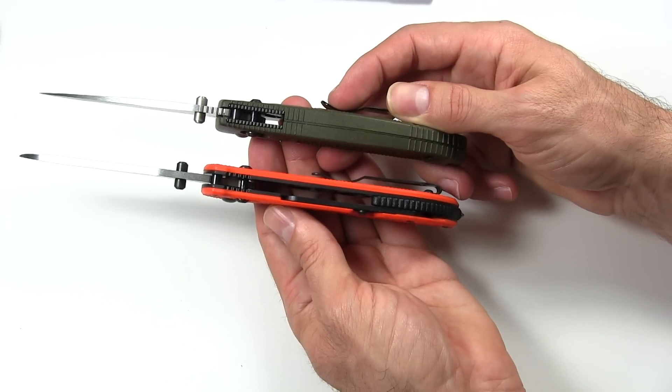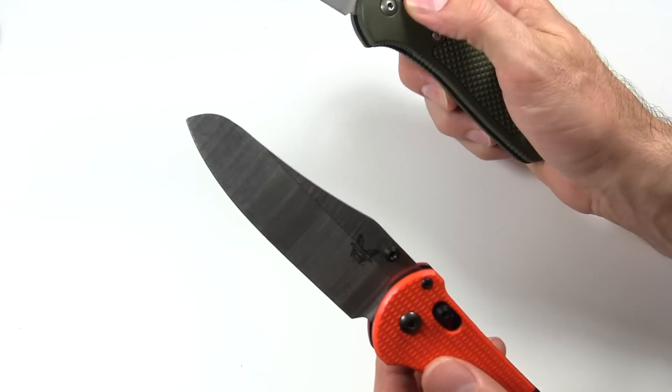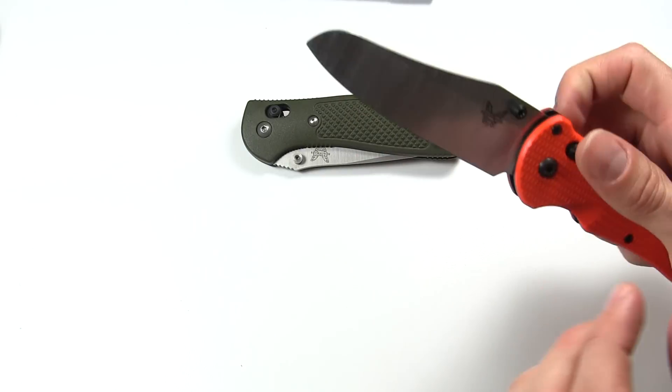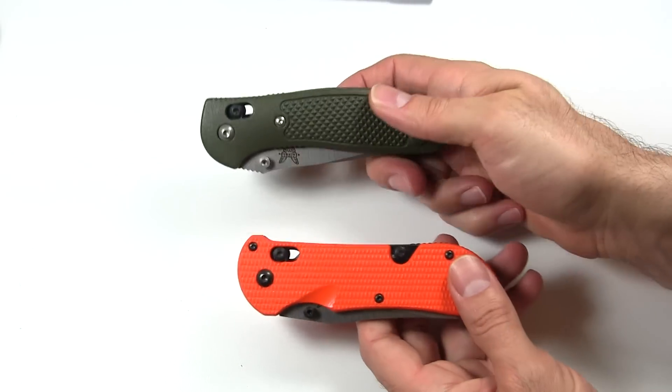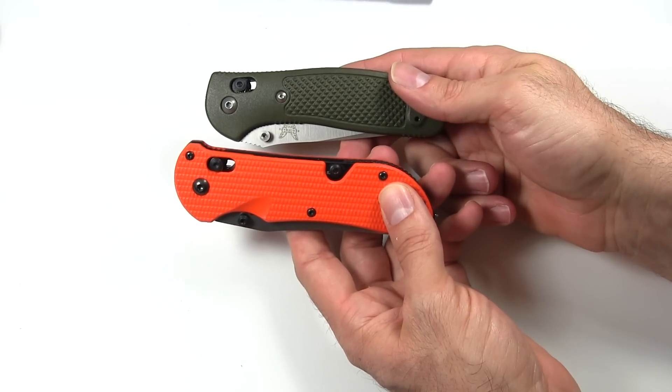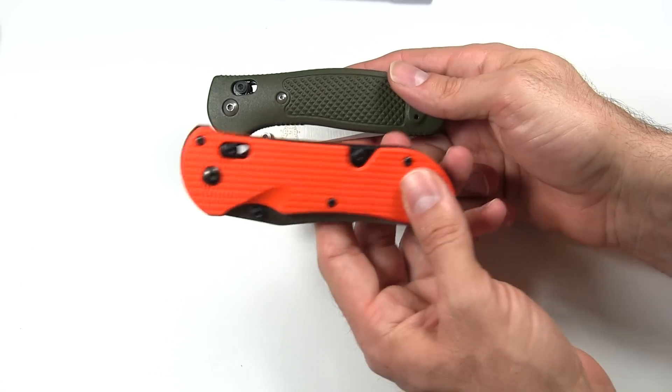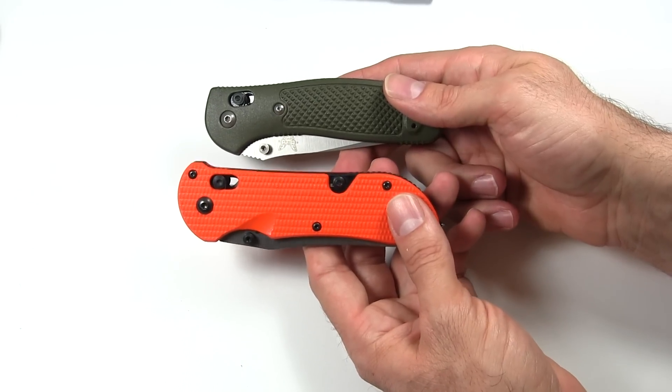So it's a little thinner with the Triage. The weight, Griptilian wins, 3.25 ounces versus a whopping 5.1 ounces. So this is, it's not a small knife. It's not a light knife.